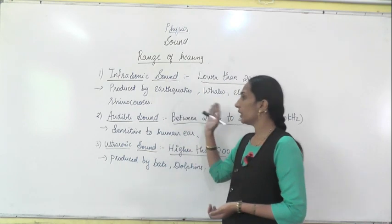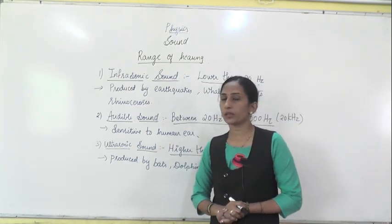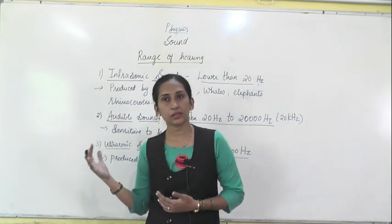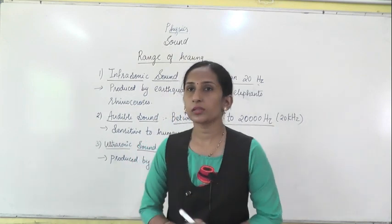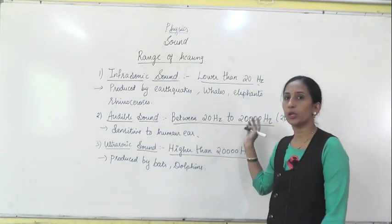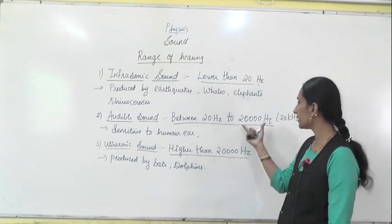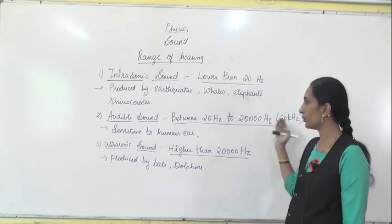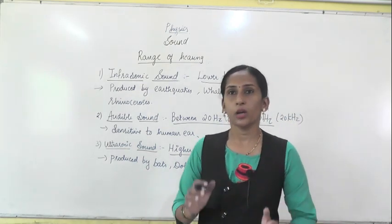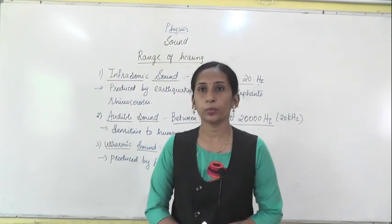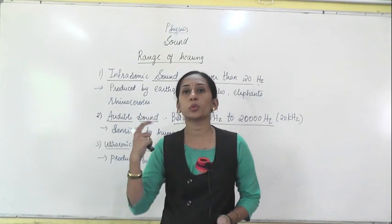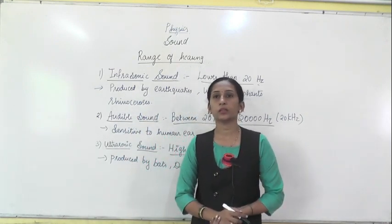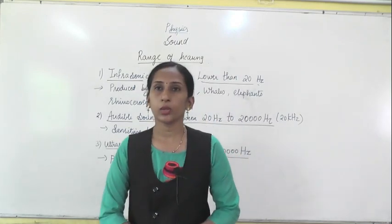The second one is the audible range. Audible range means this range can be sensed by the human ear. Our ear can sense this range, and the frequency is between 20 hertz to 20,000 hertz — 20,000 hertz can also be written as 20 kilohertz. This range of sound can be heard by a human ear, that's why it is called audible sound. This is audible to the human ear.